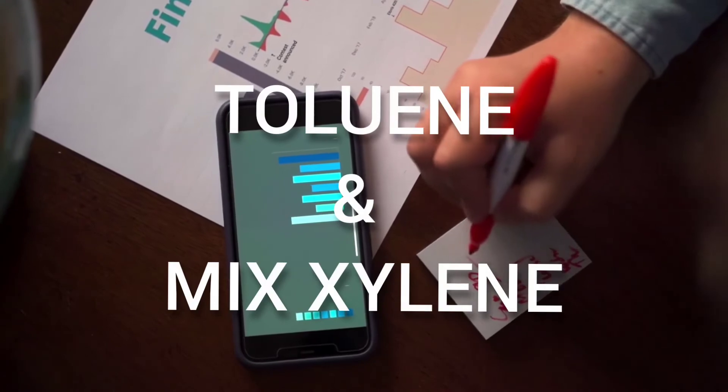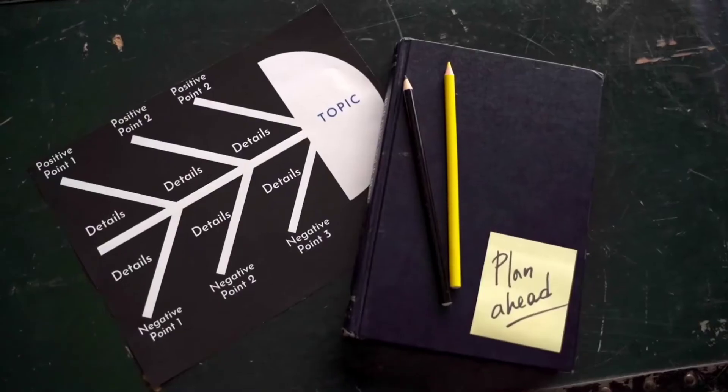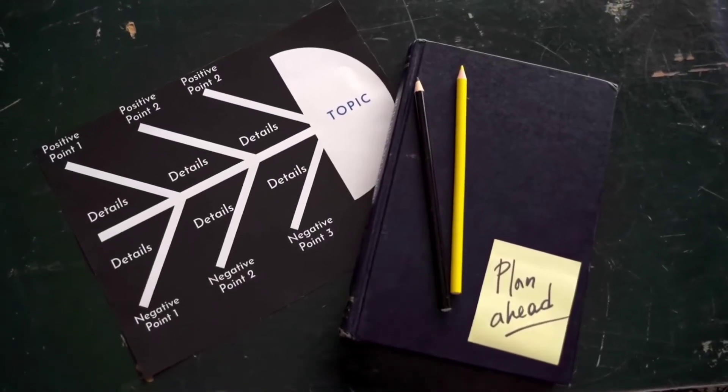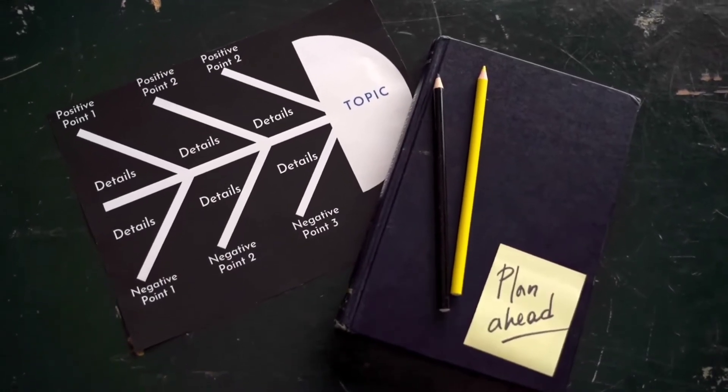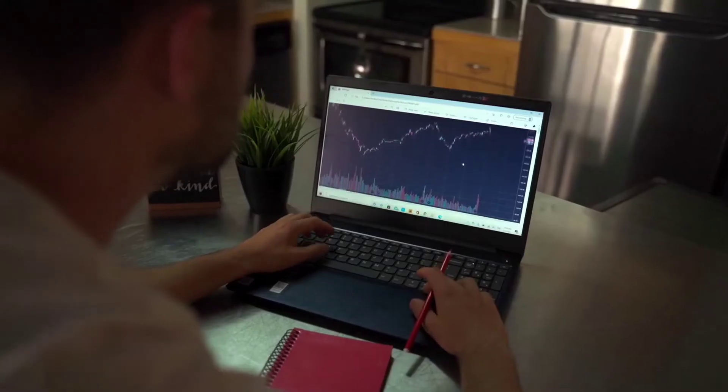Toluene and myxylene: Both products are likely to remain on the upper circuit as crude prices have again touched the level of rupees 90.